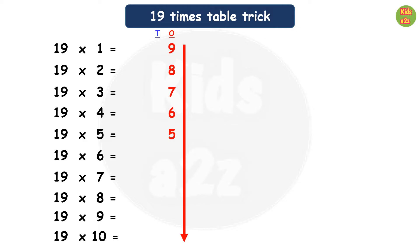5, 4, 3, 2, 1, and 0. Now for the tens column, all we have to do is just write all the odd numbers from 1 to 19. That means 1, 3, 5, 7, 9, 11, 13, 15, 17, and 19.